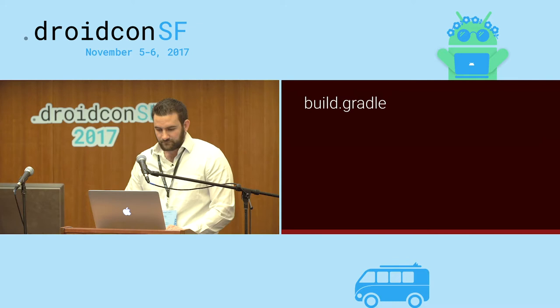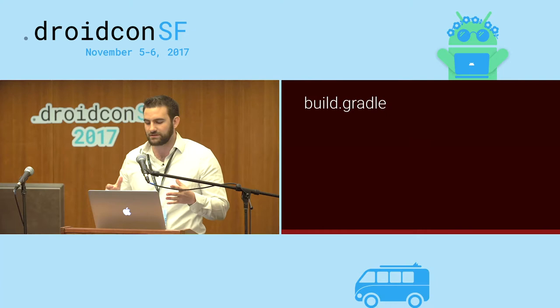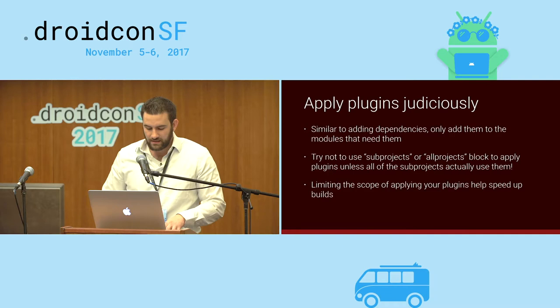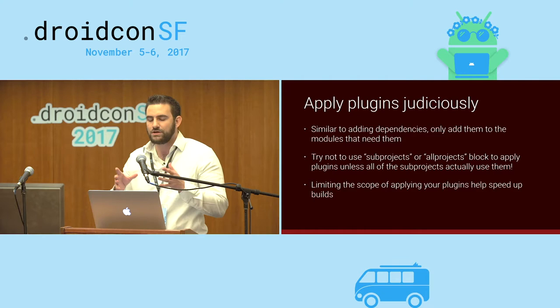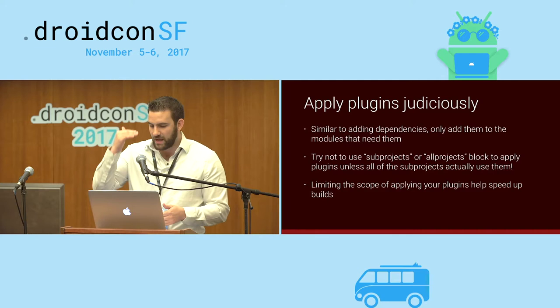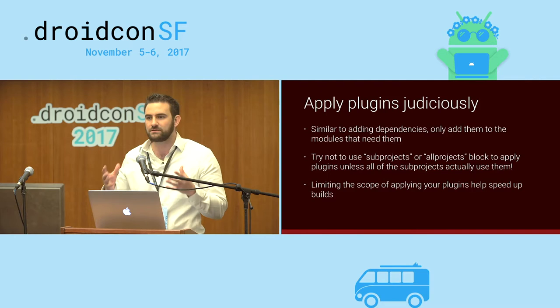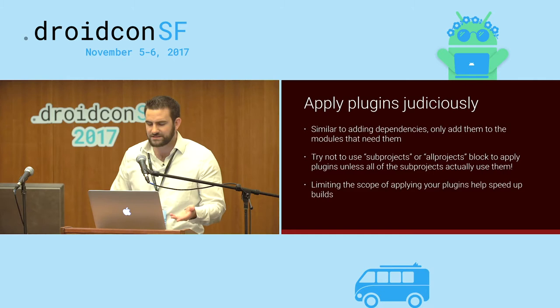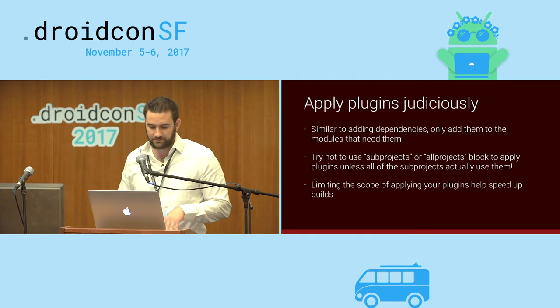Now let's focus on the actual Groovy DSL. I think people should apply plugins judiciously — determine whether you really need a plugin for a particular module. Avoid adding tons of plugins in the root project for all modules when you don't actually need all of them everywhere. Try not to use subprojects or allprojects unless you necessarily need those plugins applied to all modules. Limiting scope will help build speed, especially during configuration time.